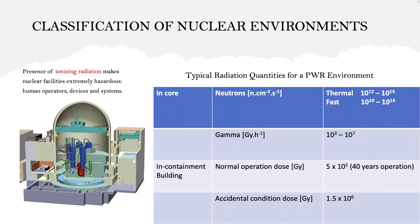I'm showing here the classification of a nuclear environment. The presence of ionizing radiation can make the nuclear facility extremely hazardous, especially to operators, but also very hazardous to devices and systems themselves. Electronic devices, when put inside there, can be quickly damaged. That's why in this regard, we are looking at optical fibers which can withstand such high radiation environments as you would have inside a reactor.